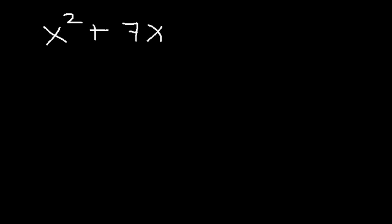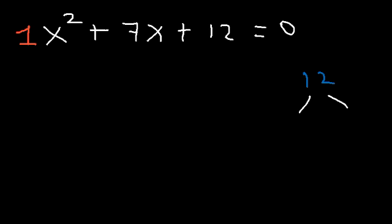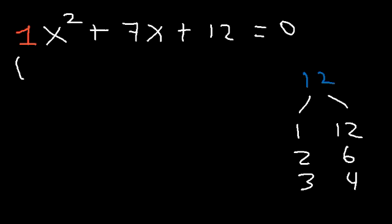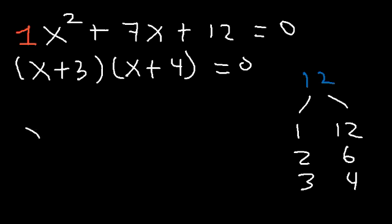What if we have a trinomial where the leading coefficient is 1? Consider the constant term 12. What two numbers multiply to 12 but add to the middle coefficient of 7? We have 1 times 12, 2 times 6, 3 times 4. Since 3 times 4 is 12 and 3 plus 4 is 7, to factor it, it's going to be x plus 3 times x plus 4. Therefore, x is equal to negative 3 and x is equal to negative 4.